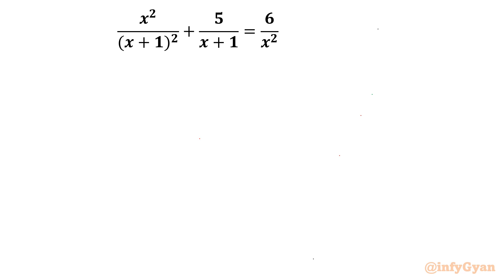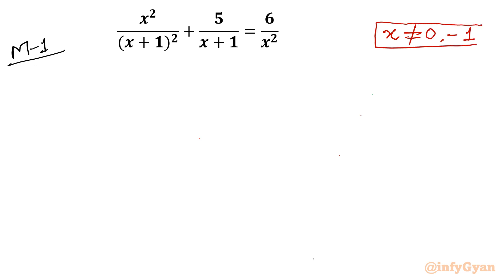Let me begin with Method 1. First, I will write the domain of the equation. You can see x+1 is in the denominator and x is also in the denominator, so we exempt straight away: x cannot be equal to 0 and x cannot be equal to −1. Now I will multiply both sides by x²(x+1)², which we can do since it is non-zero.